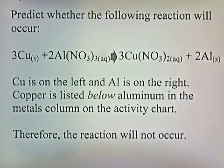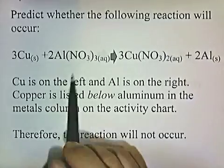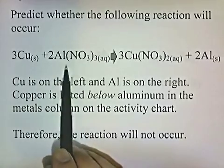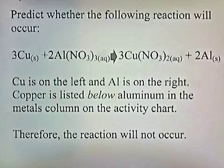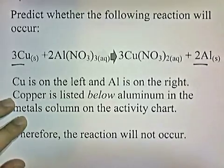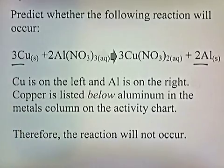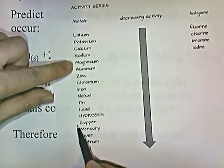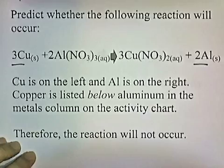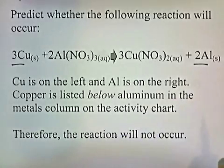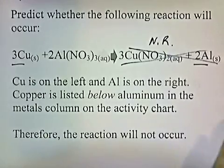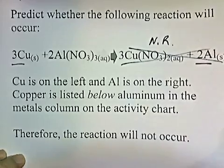Let's predict whether the following reaction will occur: copper and aluminum nitrate — will that produce copper nitrate and solid aluminum? Copper is on the left and aluminum is on the right. Copper is listed below aluminum in the metals column on the activity chart. In order for the reaction to occur, copper has to be above aluminum, but it's below aluminum. Therefore the reaction will not occur. We write NR for no reaction. If you throw copper into an aluminum nitrate solution, nothing happens.